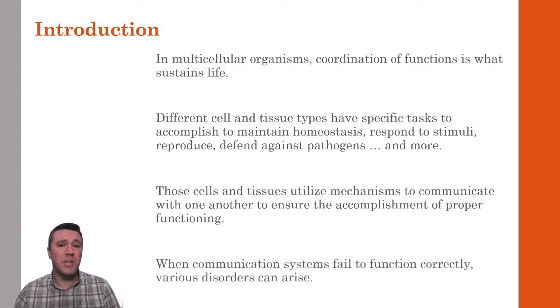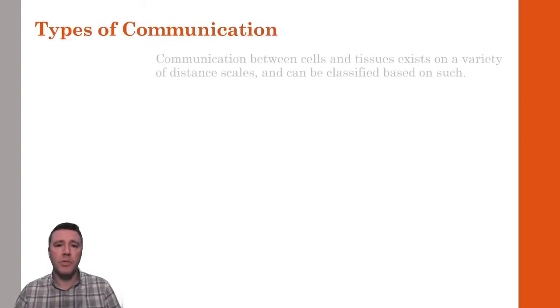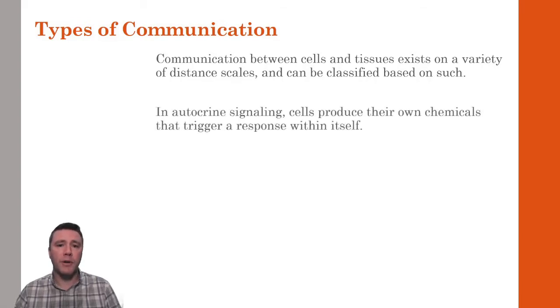By logical extension, that means that failure in communication systems may result in a variety of disorders or diseases. Although the chemical communication systems utilized by a multicellular organism function in the same general way, one manner in which they can be differentiated is based on the distance across which the chemical signal travels. The first classification of communication is called autocrine signaling,